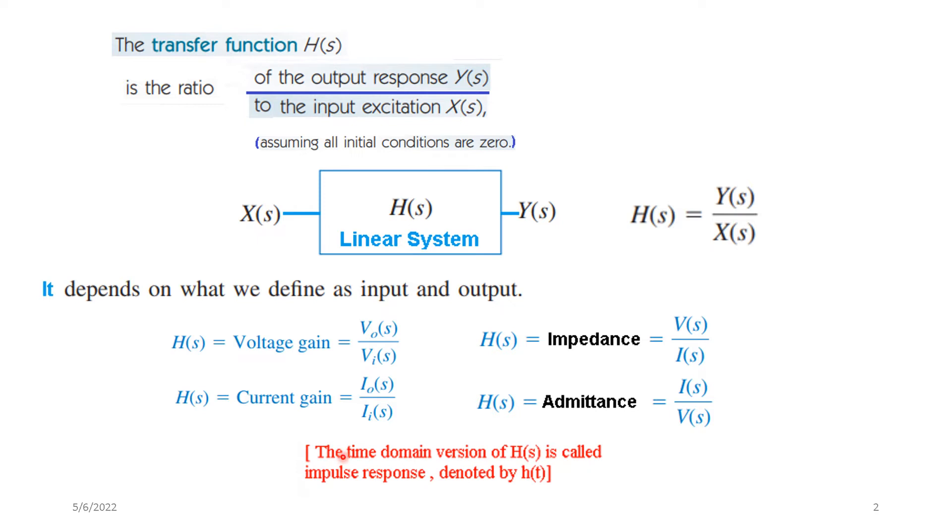And a point to note that the time domain version of the transfer function H(s) is called impulse response and it is written as h of small t.